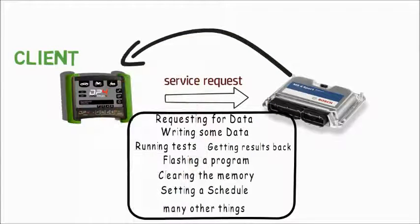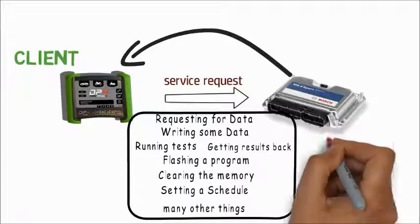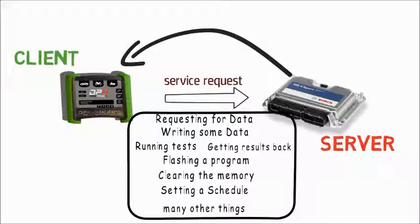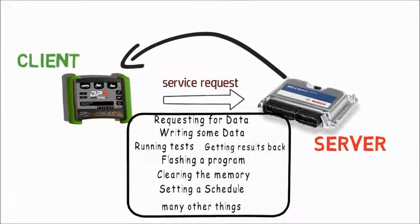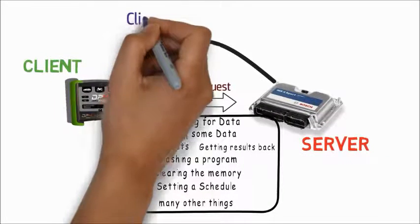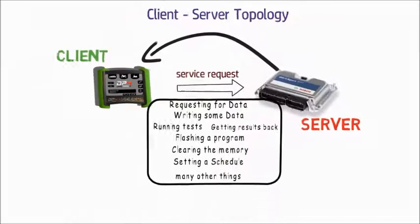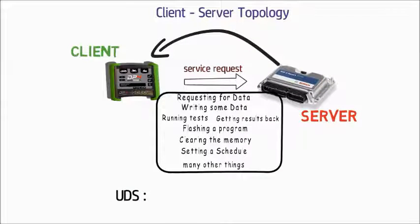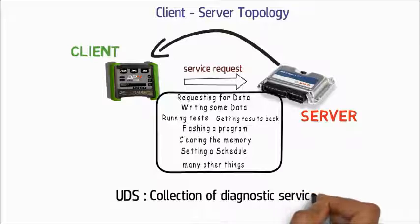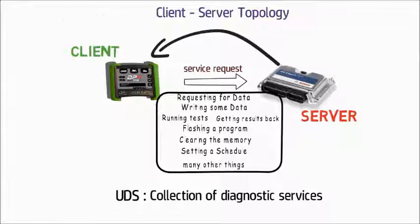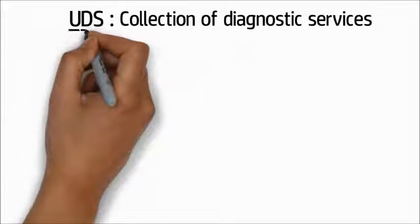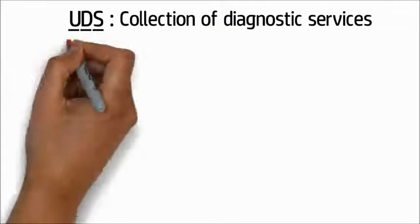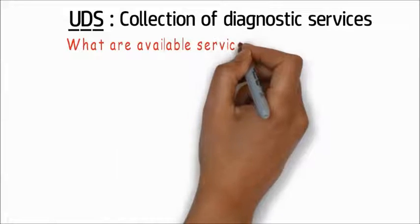Since the tester requests for a service, it is called a client. The ECU receives the service request and provides the service, hence the ECU is considered a server. So the tester and ECU exist in a client-server topology, and UDS is nothing but a collection of diagnostic services which can be requested by a tester as a client and performed by an ECU as a server.